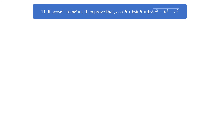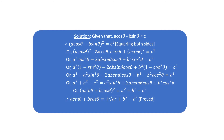Question number 11. If a cos θ minus b sin θ equals c, then prove that a cos θ plus b sin θ equals plus or minus root over a² plus b² minus c². Solution: given a cos θ minus b sin θ equals c. Squaring both sides: a cos θ minus b sin θ whole square equals c square.